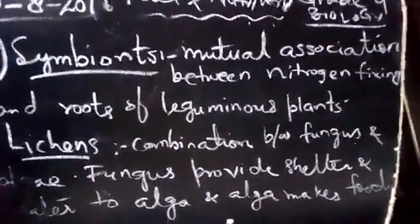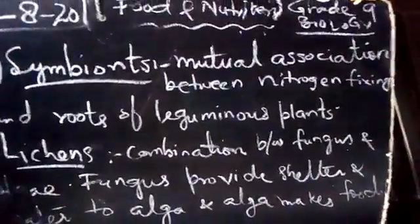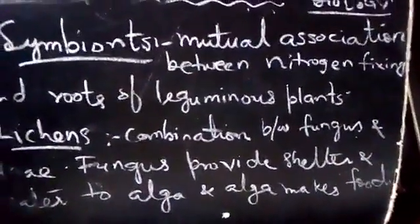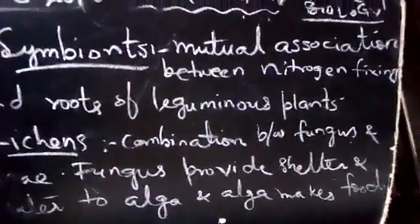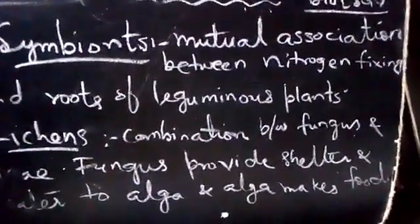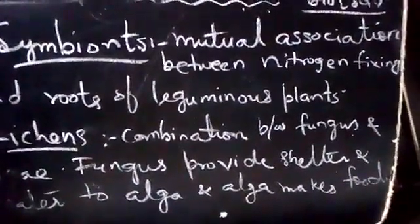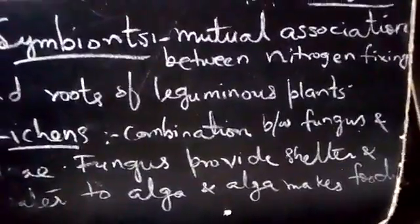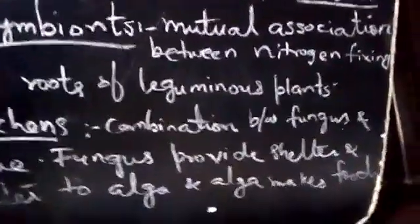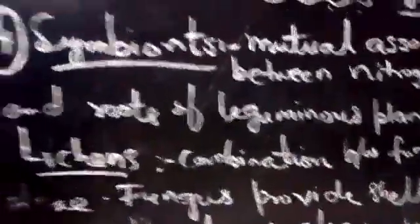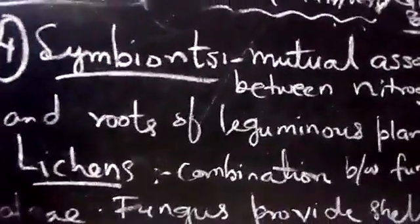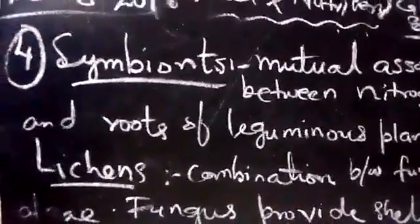Nitrogen-fixing bacteria live in the soil and are attached to the roots of leguminous plants. These plants are associated with nitrogen-fixing bacteria.